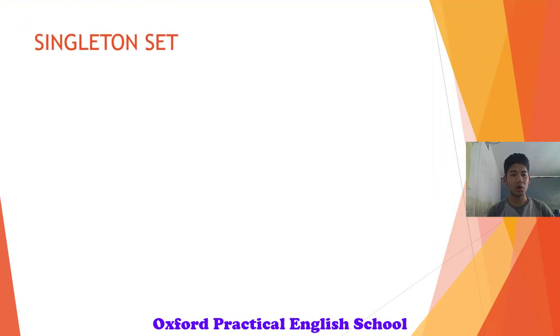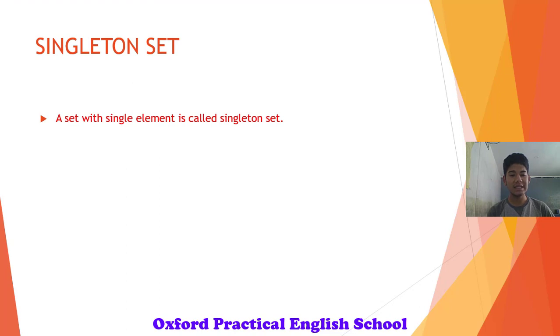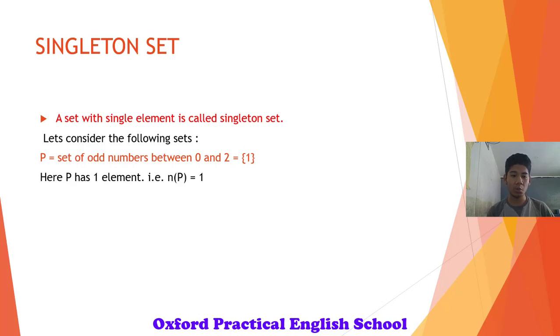Our next type of set is called singleton set. A set with single element is called singleton set. Let's consider the following sets. Set P, set of odd numbers between 0 and 2. The only odd number between 0 and 2 is 1 and P has only one element here. Therefore, P is a singleton set.